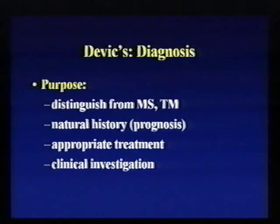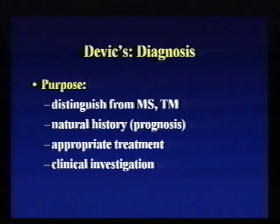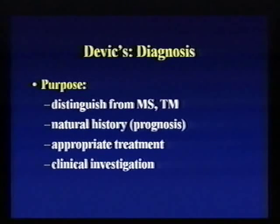Why is it important to make a specific diagnosis of Devic's? We want to distinguish Devic's from both transverse myelitis and multiple sclerosis for several reasons. One is to describe to the person afflicted what their prognosis is likely to be, which helps us understand what we need to do for treatment. It also allows us to study Devic's separately from MS and transverse myelitis in order to learn more about it.